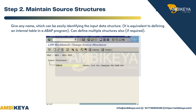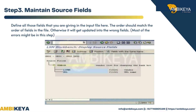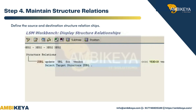You can define multiple structures if required. Step 3: Maintain Source Fields — define all those fields that you are providing in the input file. The order should match the order of fields in the file; otherwise the data will get updated into the wrong fields. Most errors tend to occur in this step.